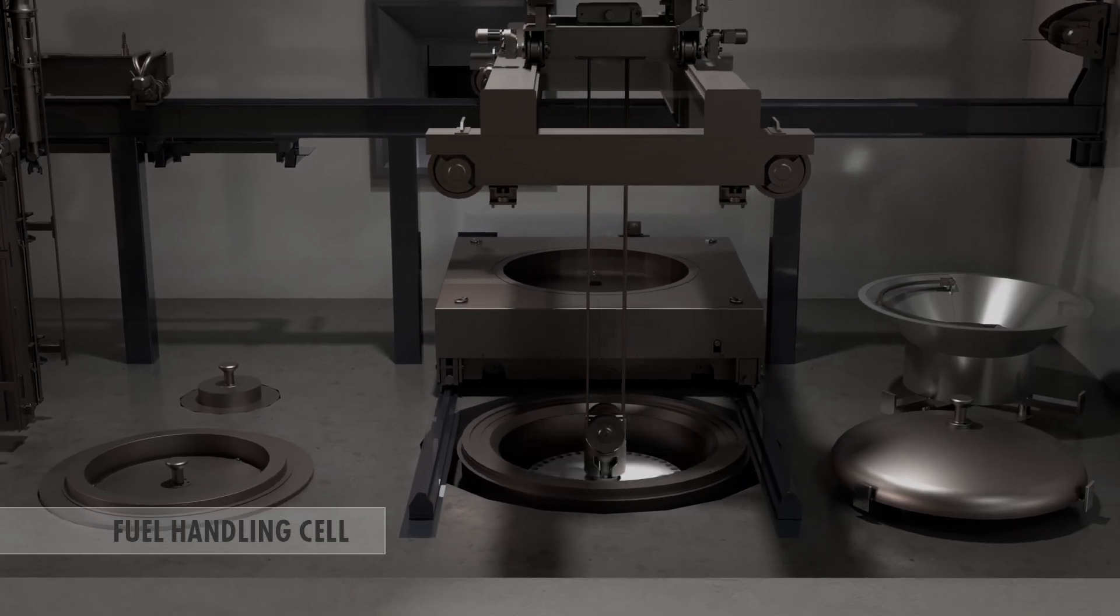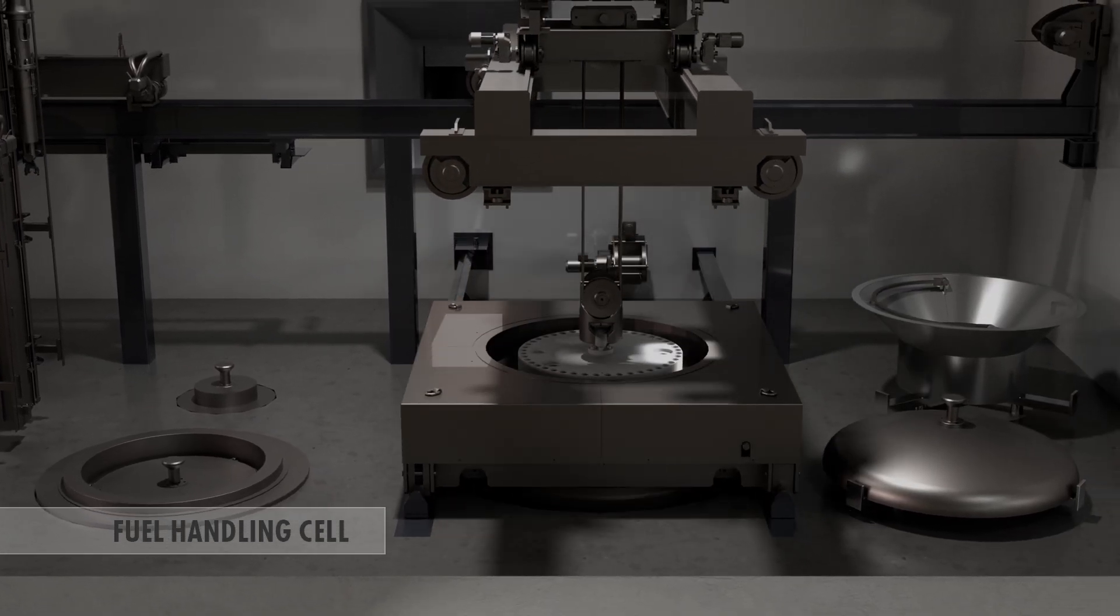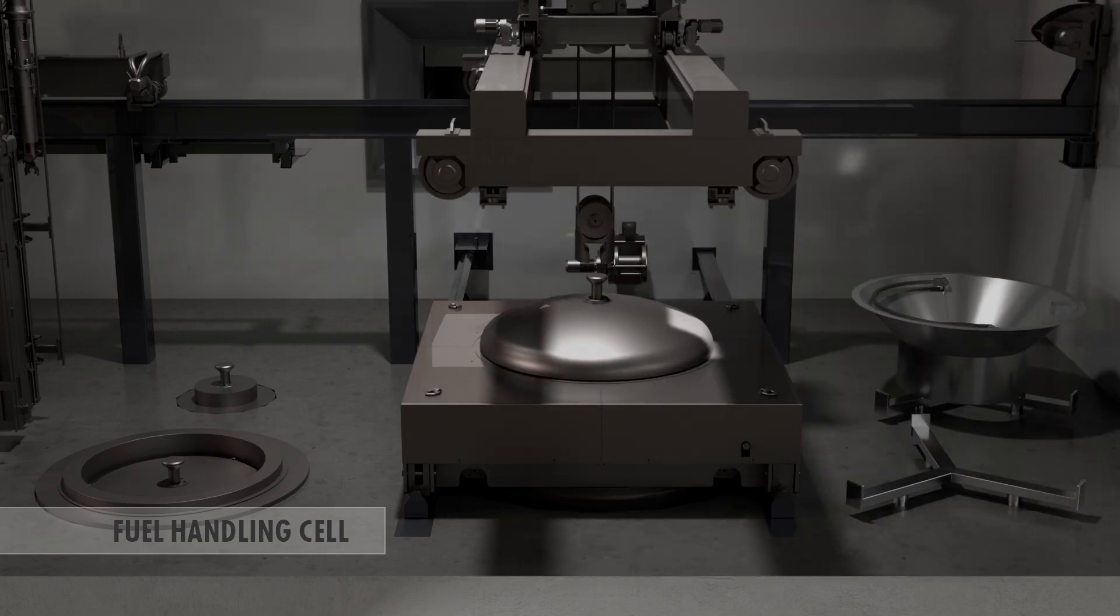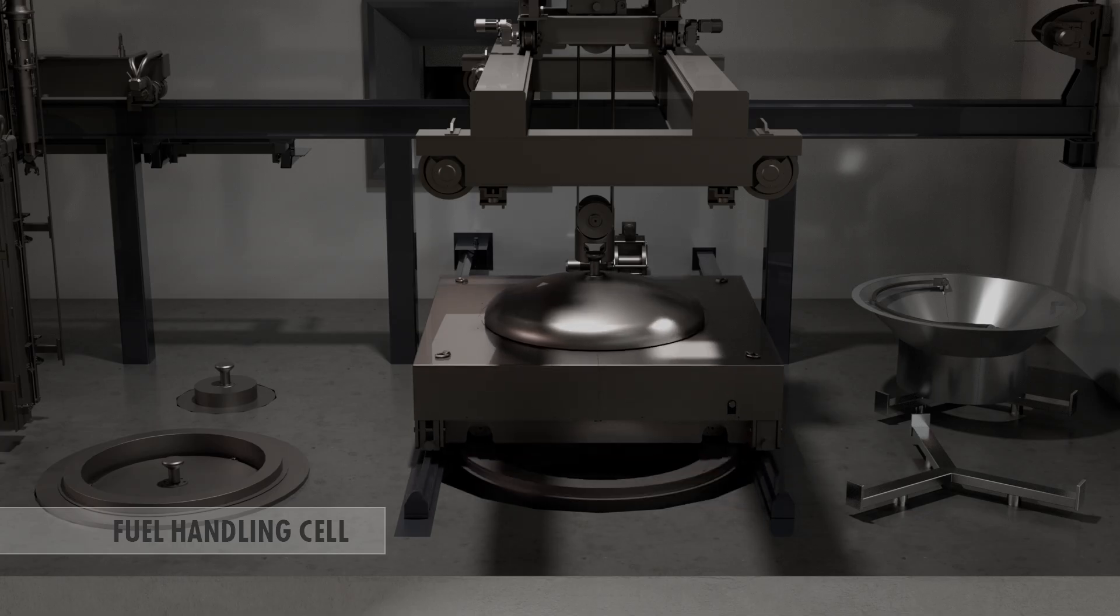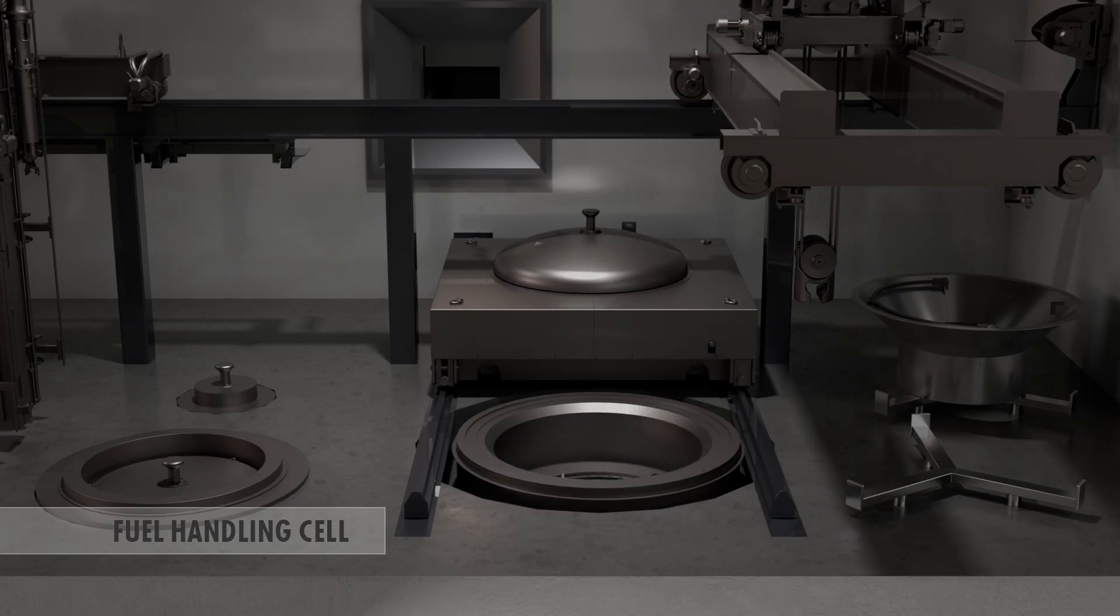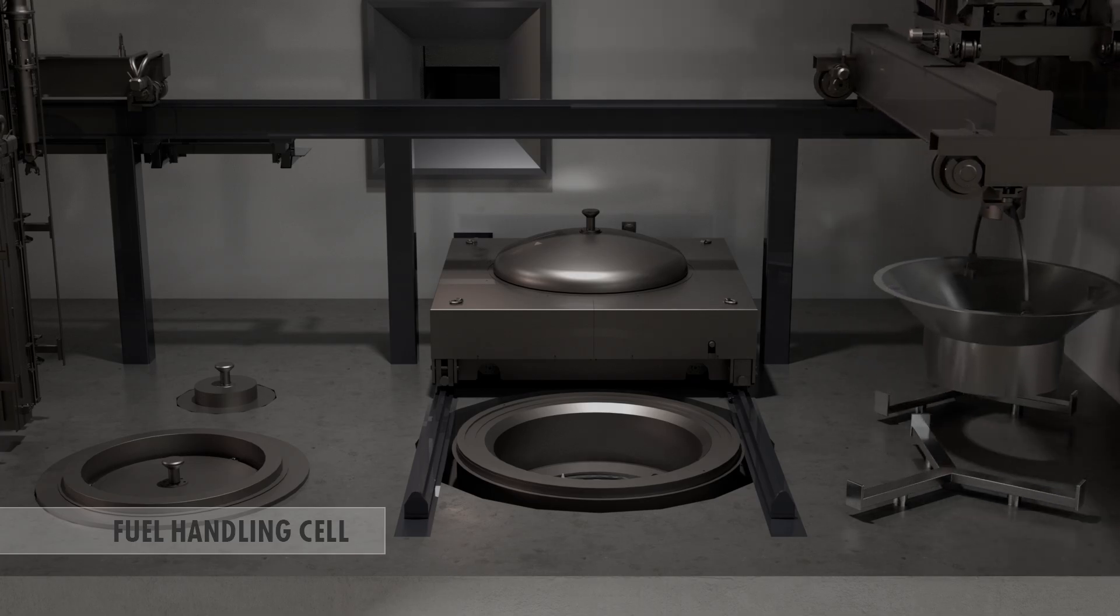The lid of the transport cask is lifted with a cask lid lifter and placed in the storage position in the radiation shielding lid, which is covered with a protective cover during encapsulation. A protective cone is installed at the top end to allow any water dripping from the fuel elements to drip back into the transport cask.